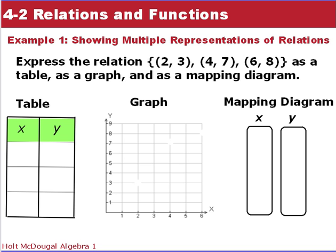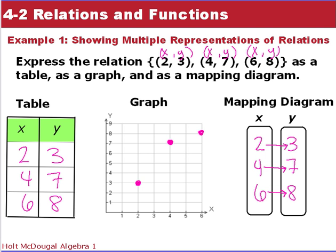So here, in this example, we want to express the relation. We have the ordered pair (2, 3), (4, 7), and (6, 8) as a table, as a graph, and as a mapping diagram.